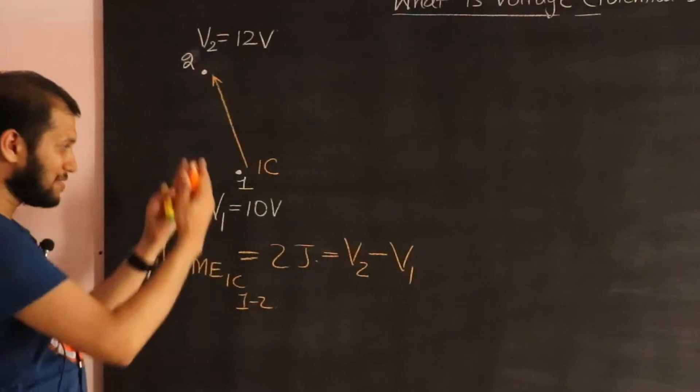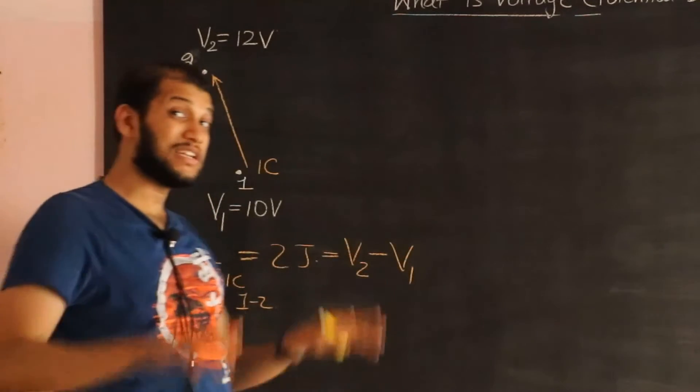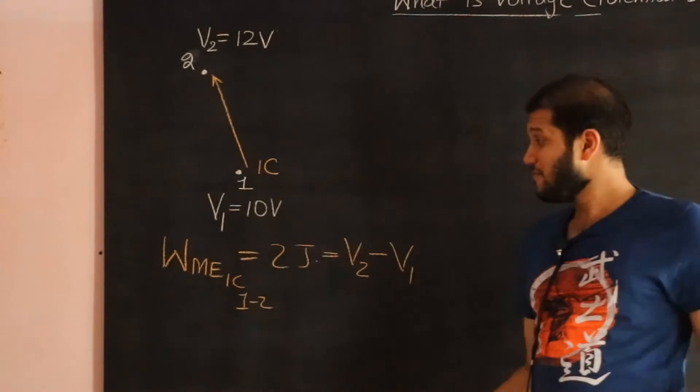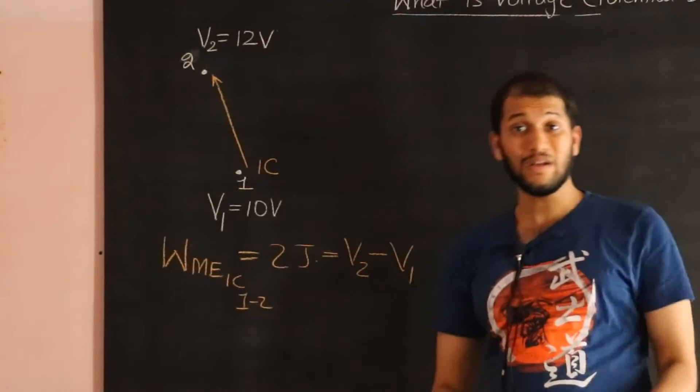So in simple terms this is just V2 minus V1. And that's the meaning of potential or potential difference in this example, because we are taking the difference. So potential difference is just an indicator of work done.